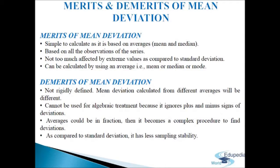Now we discuss merits and demerits of mean deviation. Merits: First, it is simple to calculate as it is based on averages — mean and median. Second, it is based on all observations of the series, making it a more comprehensive measure of dispersion compared to range and quartile deviation. Third, it is not too much affected by extreme values compared to standard deviation.